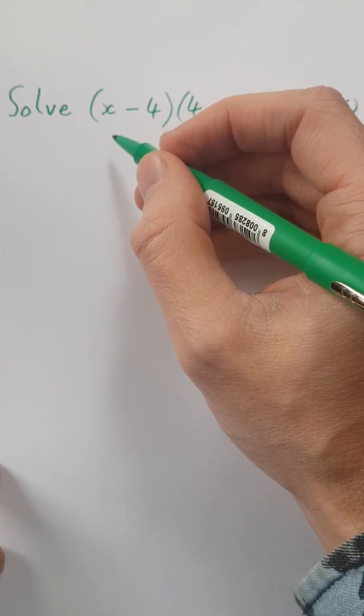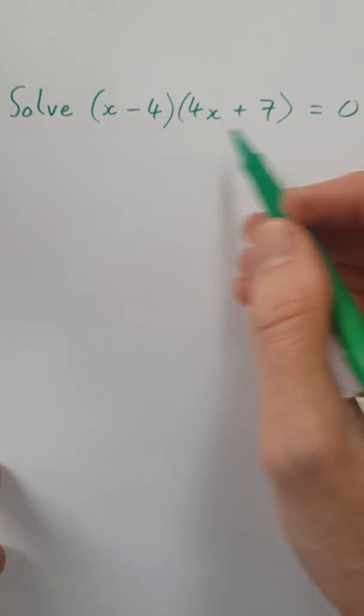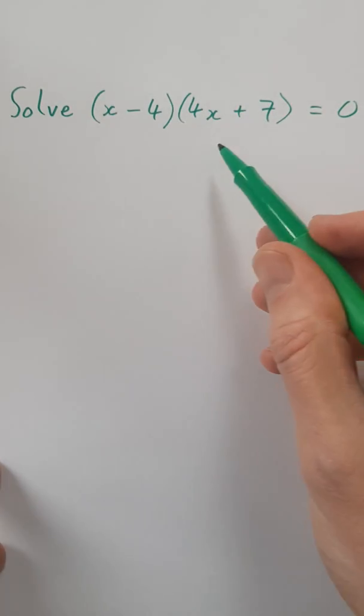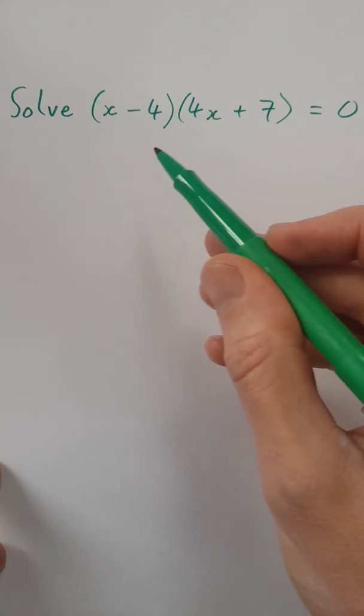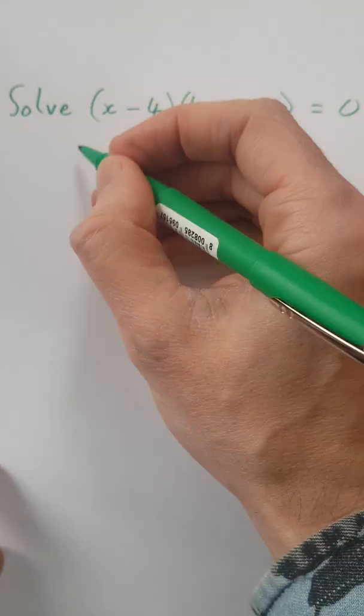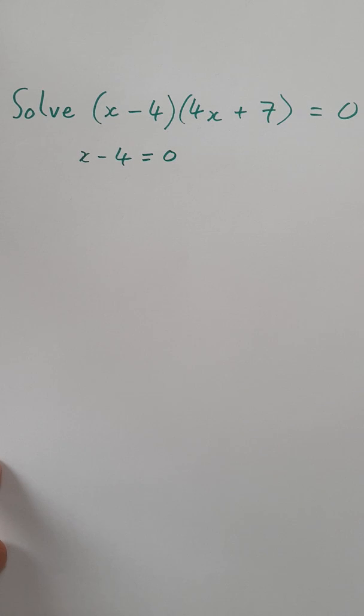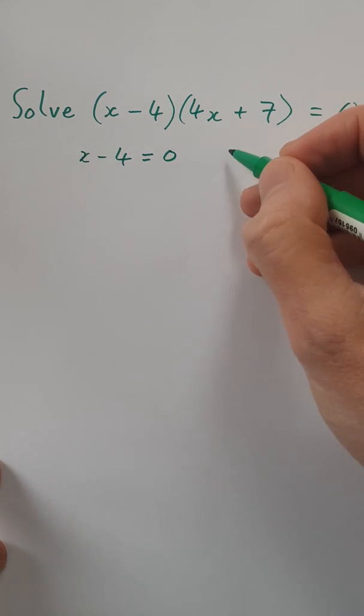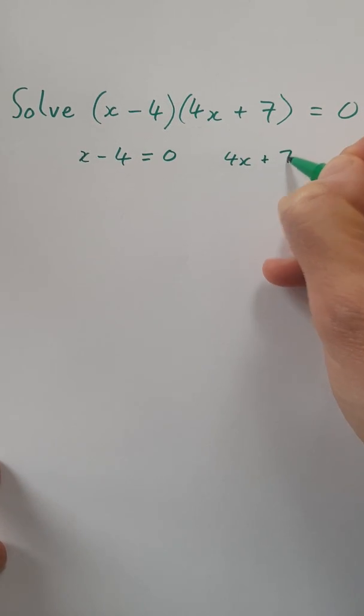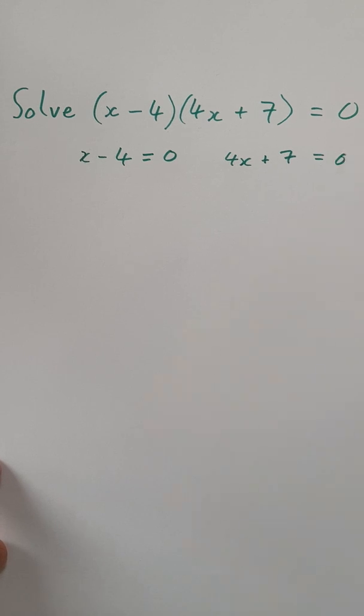You've got a zero product. You've got x minus 4 times 4x plus 7 equals zero. So either x minus 4 is zero, or 4x plus 7 is zero.